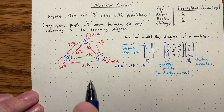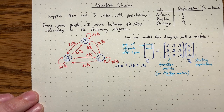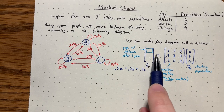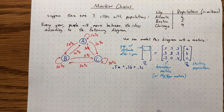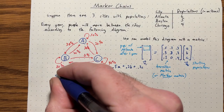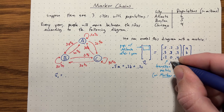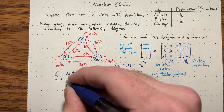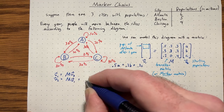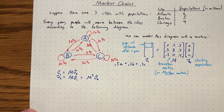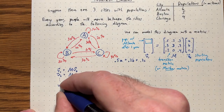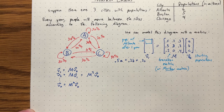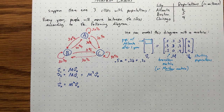What if we wanted to get the populations after two years? We don't have to do anything new - this matrix already encodes everything. We just have to multiply V1 by the matrix again. So V1 is M times V0, V2 is M times V1, which we could also say is M squared times V0. And in general, VN, the population after N years, is going to be M to the Nth power times V0.